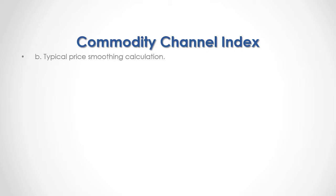Step B: Typical Price Smoothing Calculation. The current period 20-day Simple Moving Average of typical prices is equal to 1 divided by 20, multiplied by the sum from the 0 to the 20 minus 1 observation of previous period typical prices up to the current period typical price.